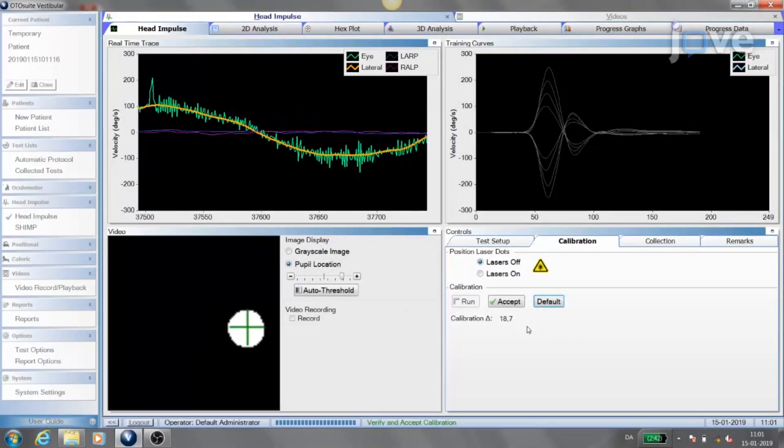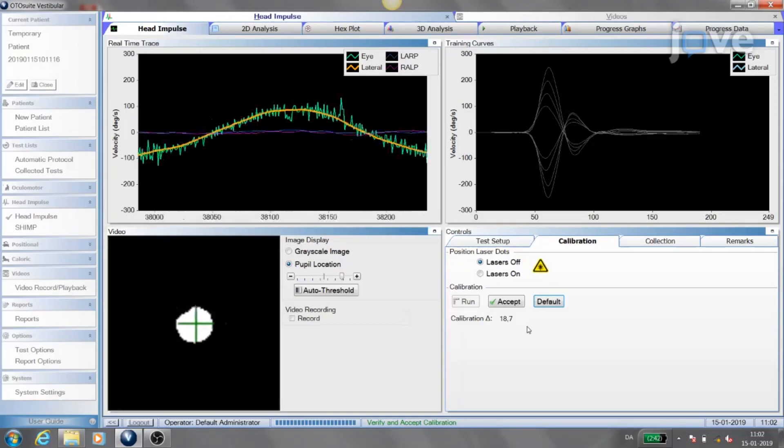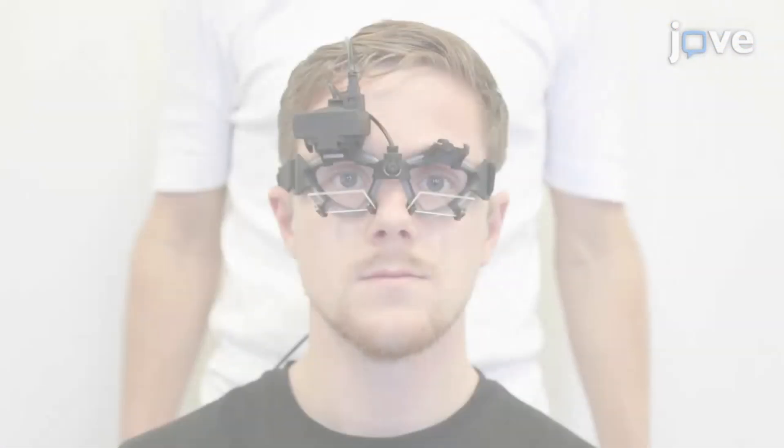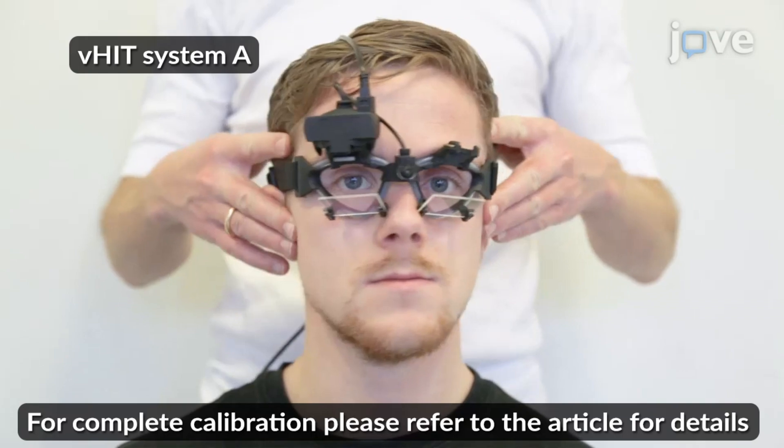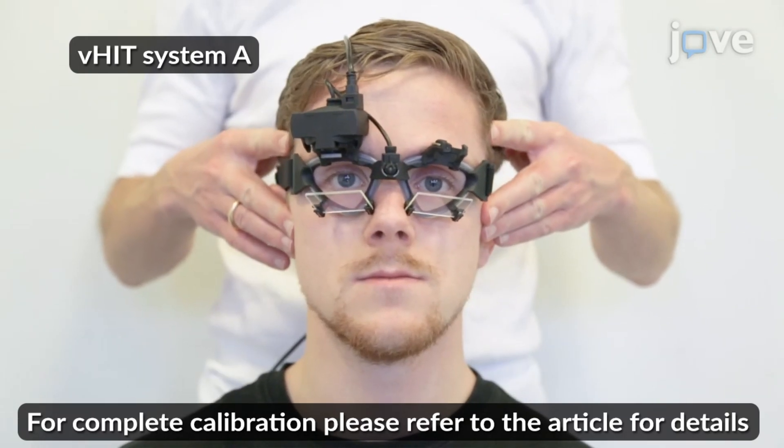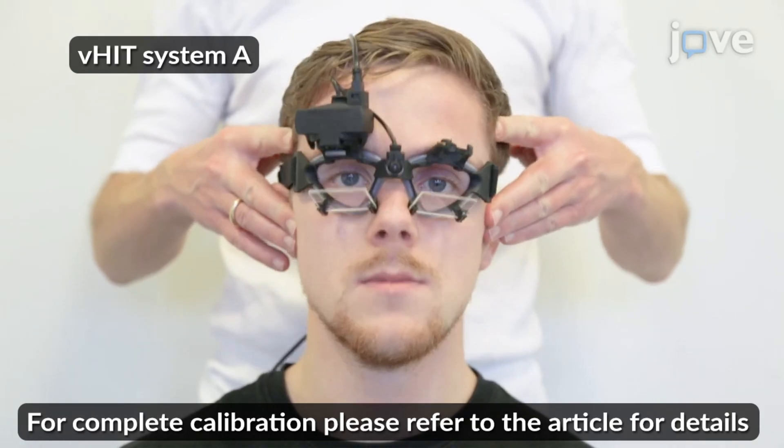Finally, check that eye and head velocities match. Calibration for VHIT system A consists of two separate calibrations, if both horizontal and vertical testing is intended.